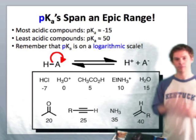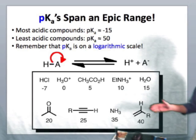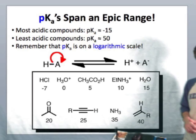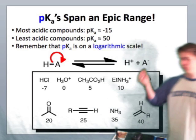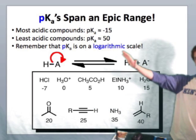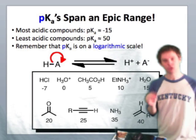At the high end of the spectrum, even higher than the final group I've shown here, are the alkanes, which have pKa's of around 50. Now, the span of this range from 15 to 50, remember that's on a logarithmic scale.